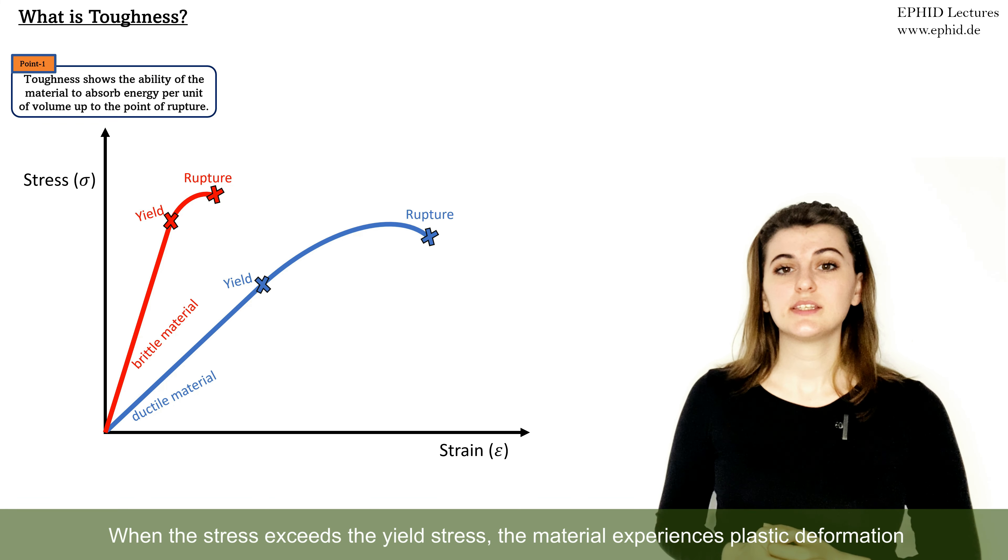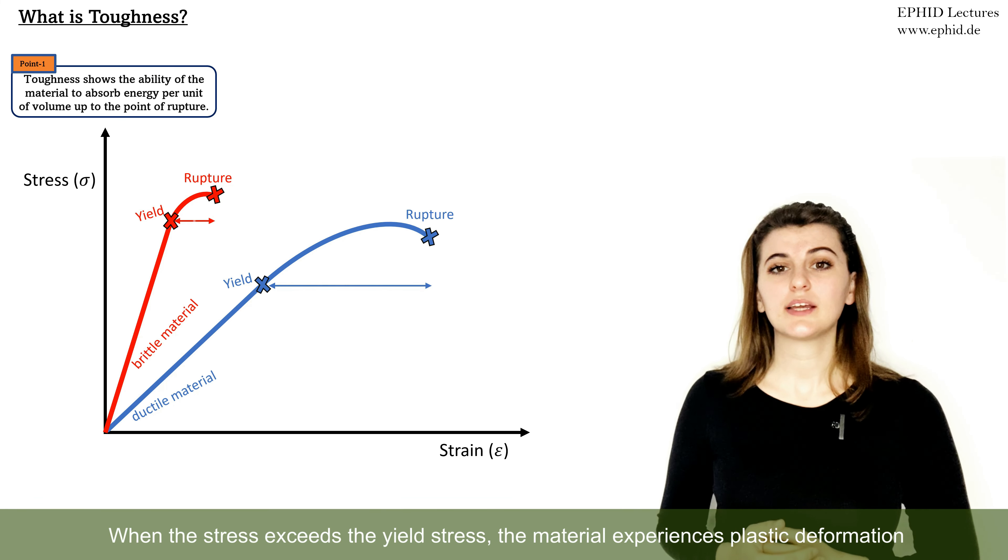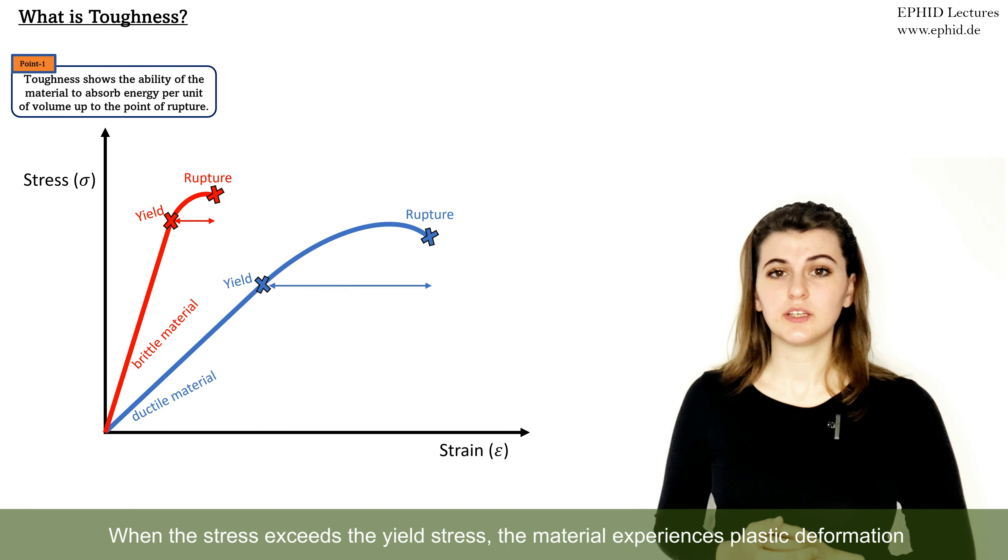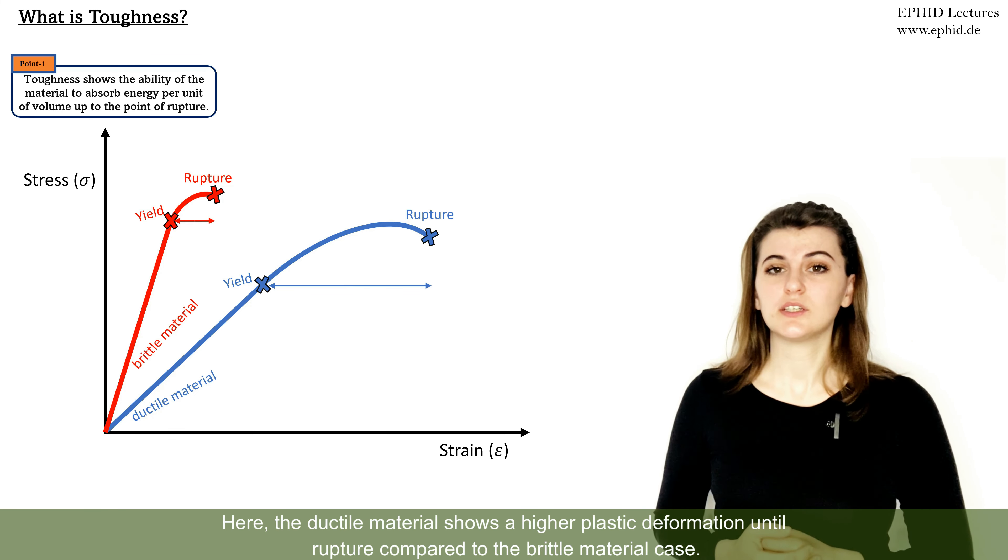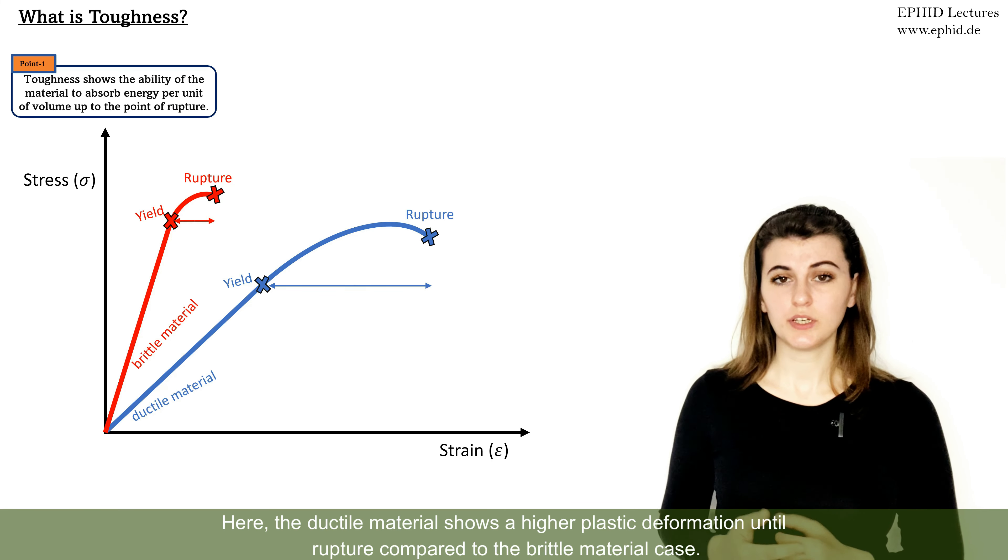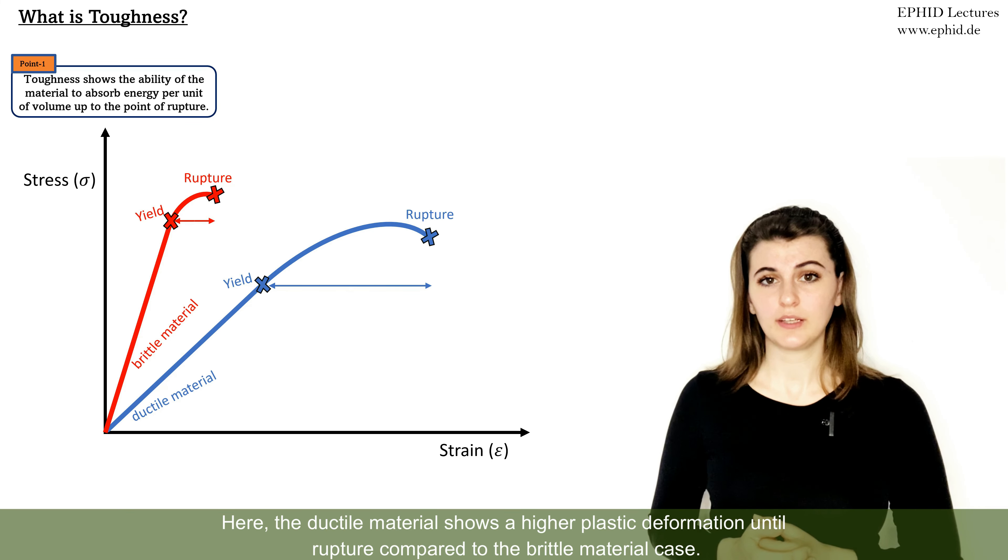When the stress exceeds the yield stress, the material experiences plastic deformation. Here, the ductile material shows a higher plastic deformation until rupture compared to the brittle material case.